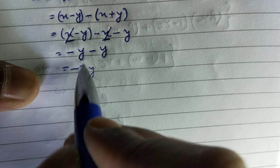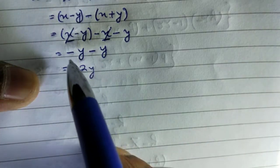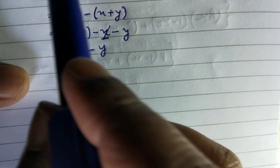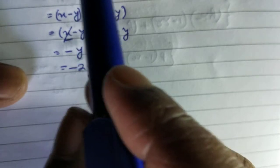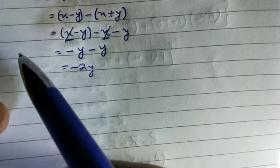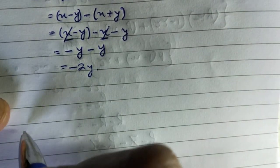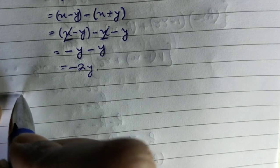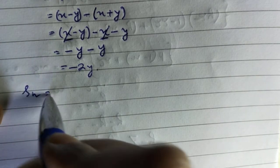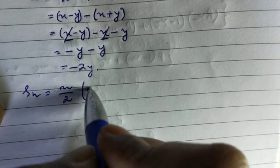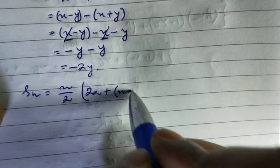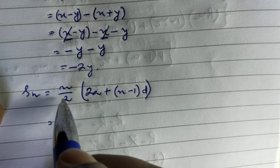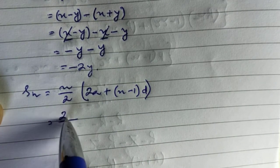So the common difference is minus 2y. It is called the common difference because the difference between each pair of consecutive terms is minus 2y. Now we need to find the sum of all the terms. The formula for the sum of n terms is: Sn equals n over 2 times [2a plus (n minus 1) times d].